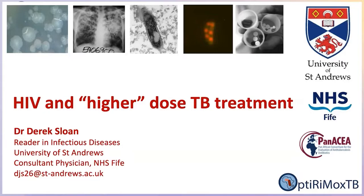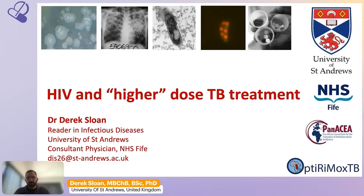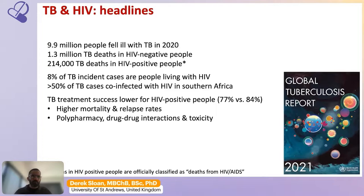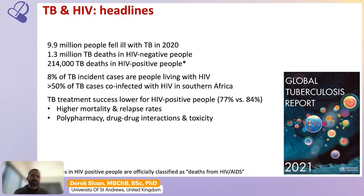Thank you very much for this opportunity to speak on HIV and higher-dose TB treatment. My name is Derek Sloan, a reader of infectious diseases at the University of St. Andrews. From the most recent WHO global TB report, there are still almost 10 million people falling ill with TB per year, and about a quarter of a million people dying of TB are also HIV co-infected. 8% of incident TB worldwide occurs in people living with HIV.